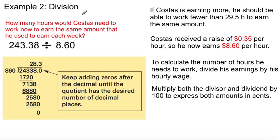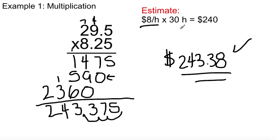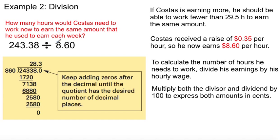All right. Example 2. Now this is a little difficult. That's why I wrote a bunch of stuff here. I should just copy and paste it from the book. I want you to take all this down. So pause right now and take all this down. But I'm going to explain it all to you. Now, example 2, division. How many hours would Costas need to work now to earn the same amount that he used to earn each week? So clearly, he's making more. He's got to work less.